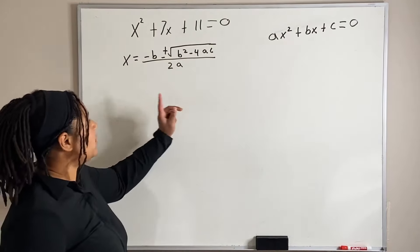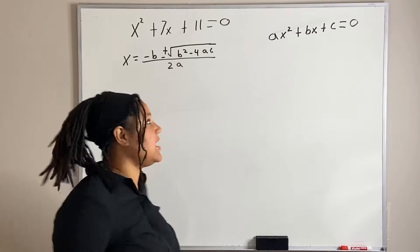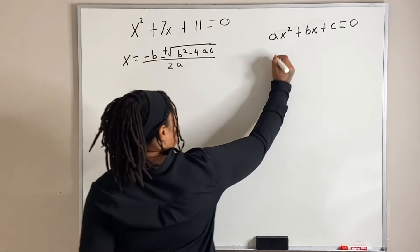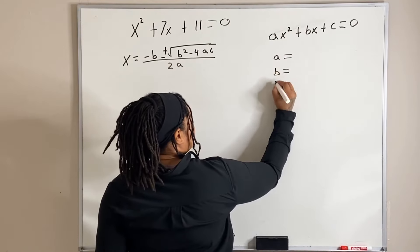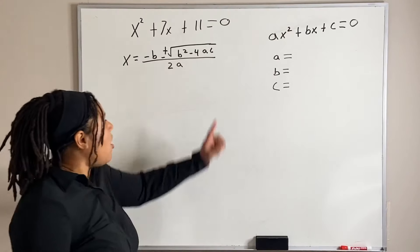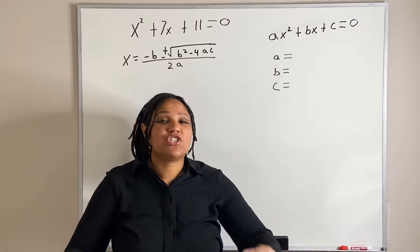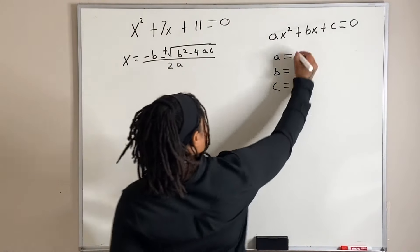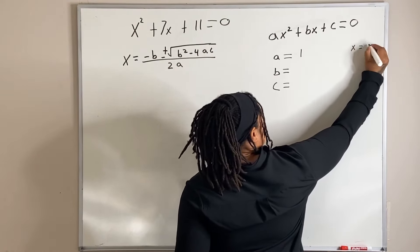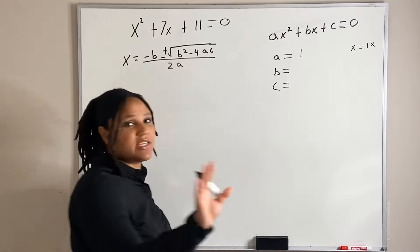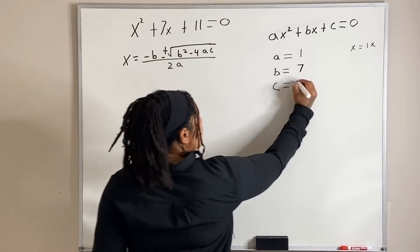What we want to do is identify what our a, b, and c are. Looking at our equation, our a is 1 — because anytime you see x by itself, it's understood to be 1, since x is the same as 1x. Our b is 7, and our c is 11.